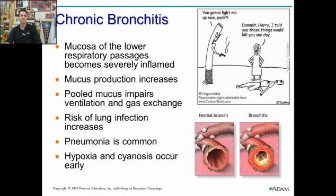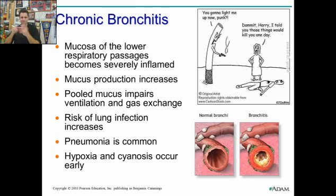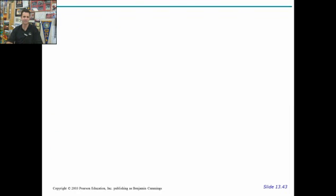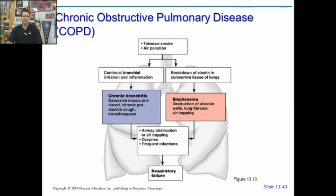With chronic bronchitis, the mucus inside the bronchial membrane increases. The walls of the bronchial tubes themselves enlarge, which impairs gas exchange and decreases how much air goes through the tube. This causes hypoxia. All of these — COPD, emphysema, chronic bronchitis — fit together and all lead to respiratory failure.